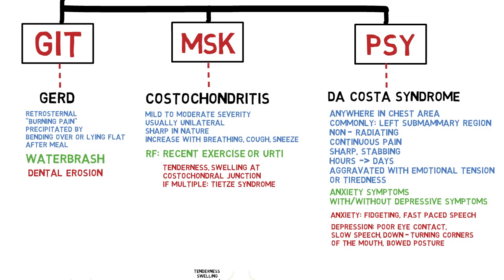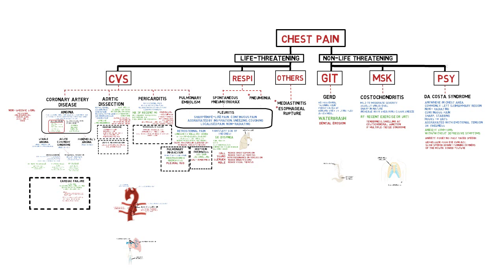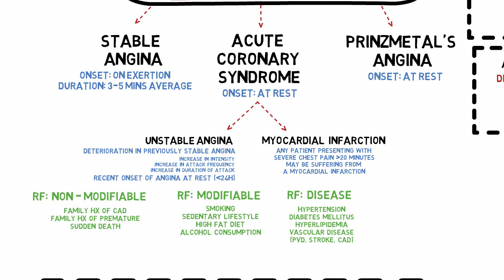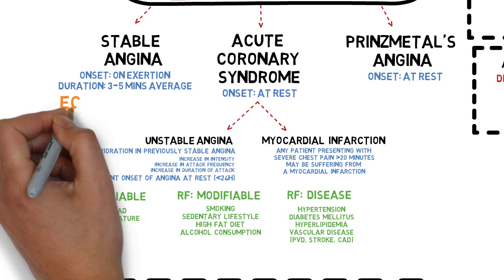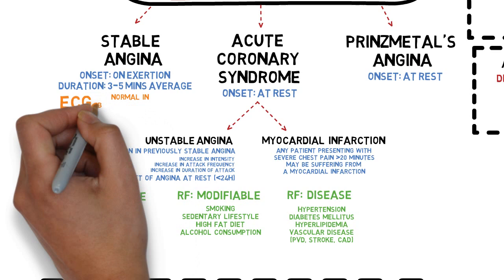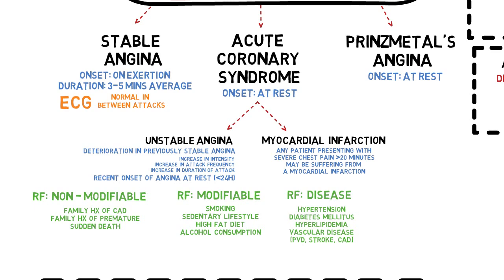The next and final step is diagnostic investigation. Remember, some diseases may not need special investigative equipment because history taking and physical examination should already guide you to 80 to 90% of diagnosis. For coronary artery disease, the easiest, non-invasive, readily available investigative tool is the electrocardiogram. For stable angina, ECG findings are normal between attacks. Ischaemic changes such as ST depression and T wave inversion may be seen when an exercise tolerance test or stress echo is done.